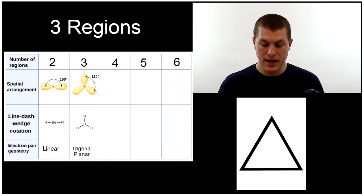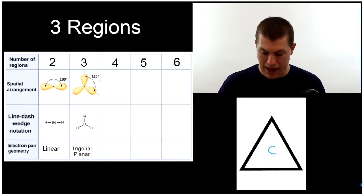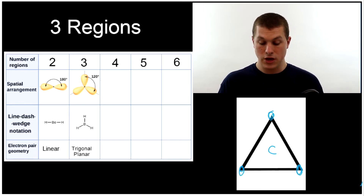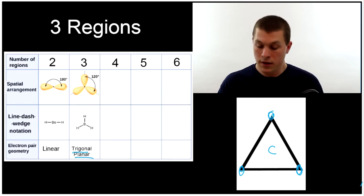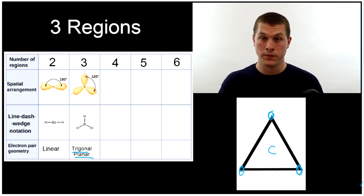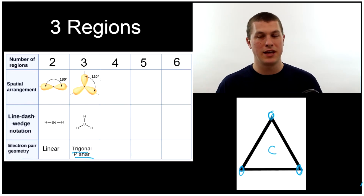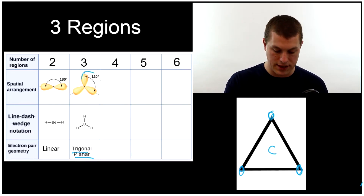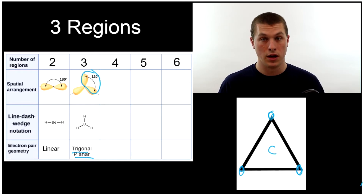With three regions of electron density, it's like distributing our atoms around a triangle. We have the center atom with an outer atom at each of the three positions, all in a plane — so we call it trigonal planar. Planar meaning in a plane, trigonal meaning three. The atoms are distributed equally around a triangle. Since a circle is 360 degrees, splitting that into three gives 120-degree bond angles — that's the bond angle for trigonal planar electron geometry.